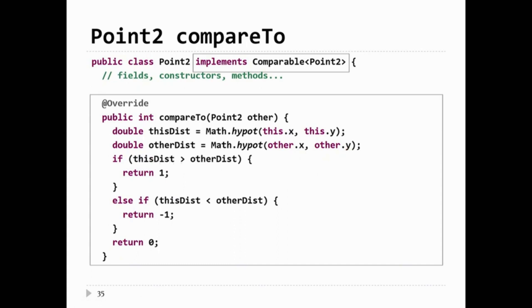Now we compare the two distances. If this distance is greater than the other distance, we have to return a positive integer value — it doesn't matter which one, so I'm just going to return 1. If this distance is less than the other distance, I have to return a negative integer value — I'm just going to return -1. Otherwise, the distances are equal, so we return zero. And that's it — it's usually not difficult to implement the method.